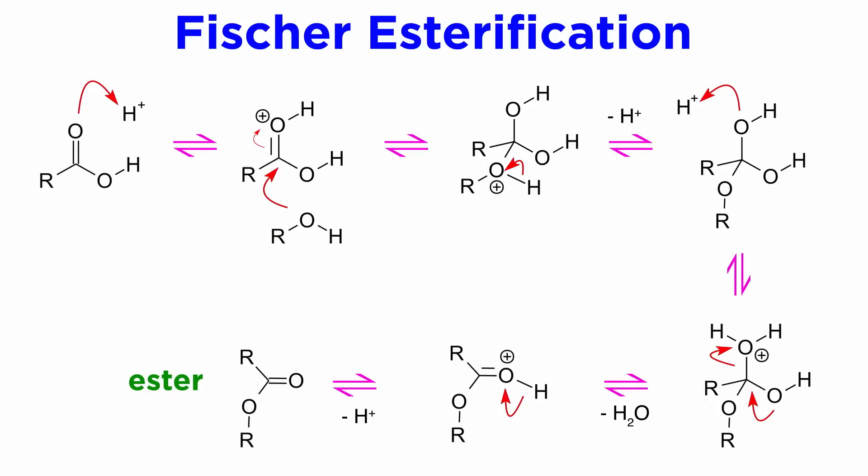All of the steps in this mechanism are reversible, so reaction conditions must be selected to deliberately drive the equilibrium in one direction or the other. Excess alcohol present as the solvent drives things towards the ester, while excess water in solution drives things back towards the carboxylic acid.